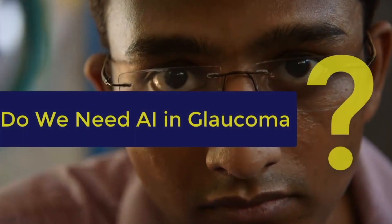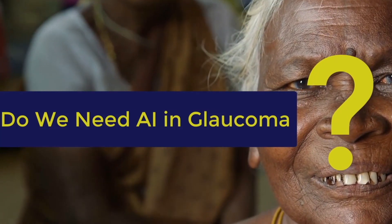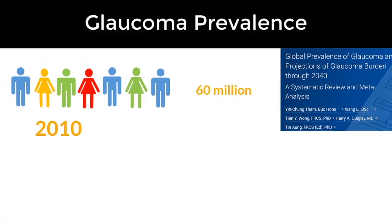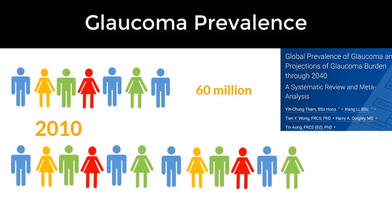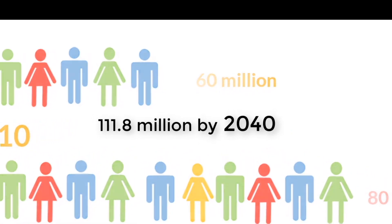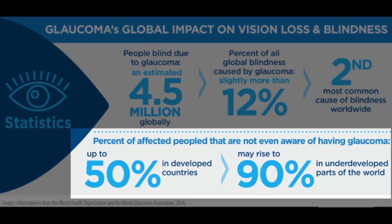Do we need artificial intelligence in glaucoma? Glaucoma, the silent killer of eyes, is the second most common cause of blindness in the world. Its prevalence reached over 60 million by 2010 and over 80 million by 2020. It is so common yet so easily overlooked — 50% of individuals in developed countries and 90% in developing countries are unaware of having glaucoma.